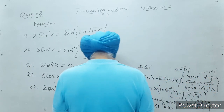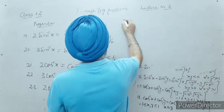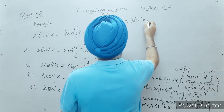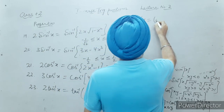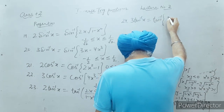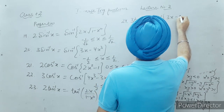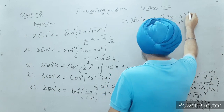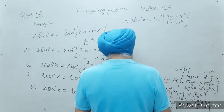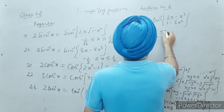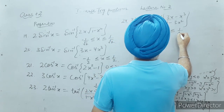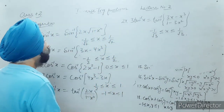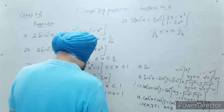The next property: 3 tan inverse x equals tan inverse of (3x minus x³) divided by (1 minus 3x²), where minus one by root 3 is less than or equal to x less than or equal to one by root 3. This is the formula of 3 tan inverse x.